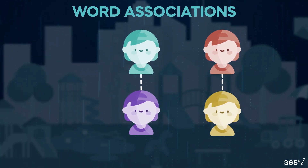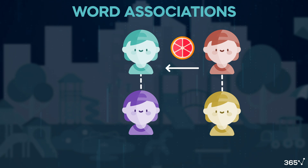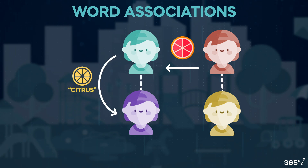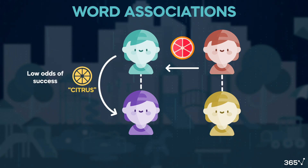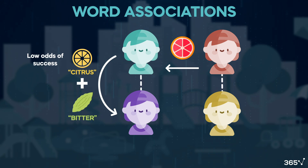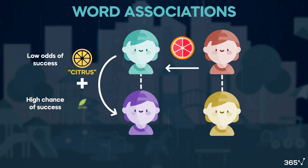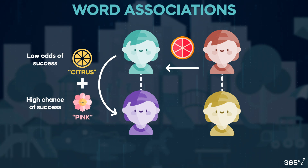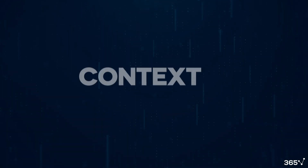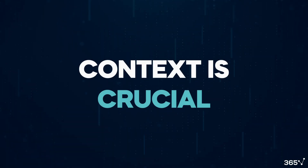If I'm given grapefruit, I might need two turns. First, citrus, which gives my partner a low success chance. Then bitter, which ensures they guess correctly. Alternatively, saying citrus and pink also offers a high chance of success. Context is crucial.